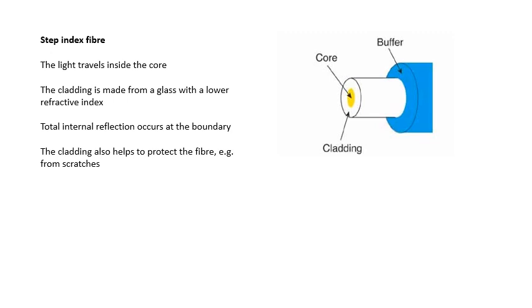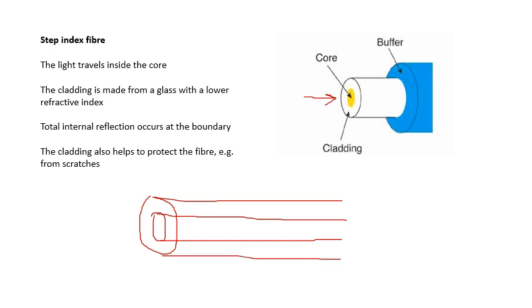So we need to know quite a bit about fibre optics. We need to know that we use something called a step index fibre. So the different parts of the fibre, we have the core, we have the cladding, and then there's some kind of a plastic coating on the outside called the buffer. And light travels inside the core, and it bounces around inside the core. The cladding is made from a glass with a lower refractive index.